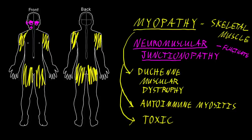This fluctuation is often related to how much the muscles are being used, so that the weakness tends to get worse with muscle use — which we call fatigability. The strength often returns with resting of the muscles.